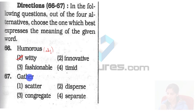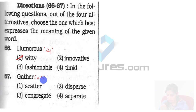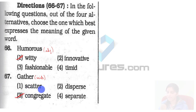Next is 'gather.' Gather means to collect things. It is a verb which means to bring together or collect. So the synonym of gather is going to be 'congregate.' Scatter, disperse, and separate all mean to separate or spread things apart — these are antonyms of gather.